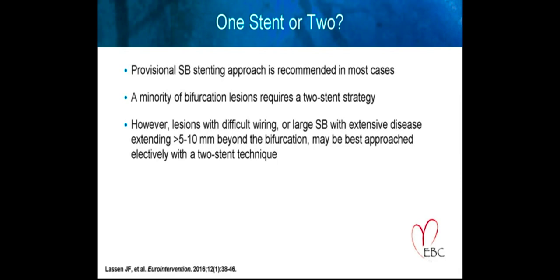One of the major debates with bifurcation treatment strategies is whether to use one stent or two. Through significant research, including randomized controlled trials, registries, and personal experience, it is understood that provisional side branch stenting is recommended in most cases, and a minority of bifurcation lesions require a two-stent strategy. Lesions with difficult wiring or large side branch with extensive disease extending 5 to 10 millimeters beyond the bifurcation may be best approached electively with a two-stent technique.